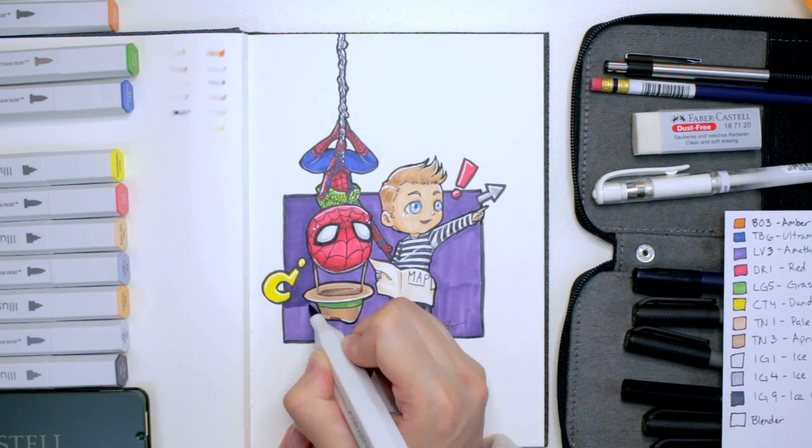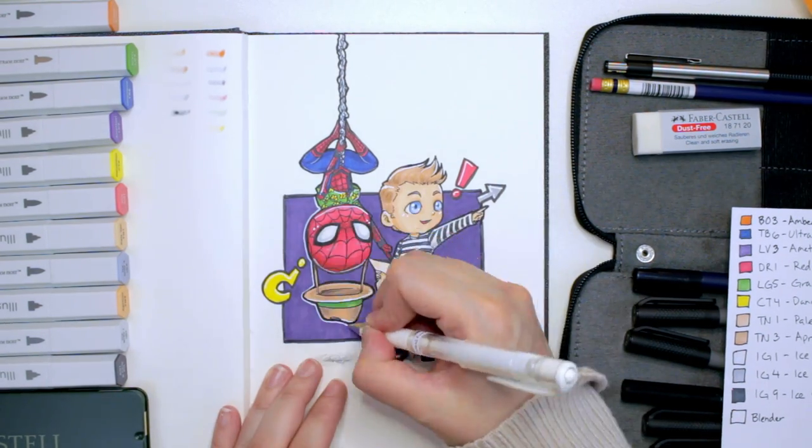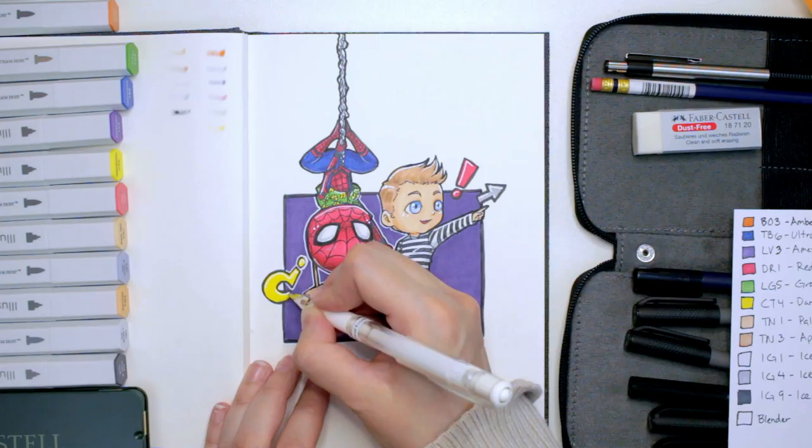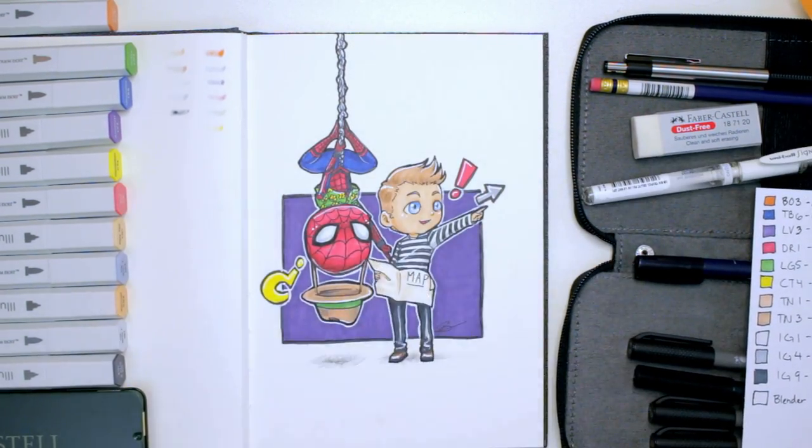I put down two layers going in different directions, trying to make the color look less streaky. To pop the characters out from the dark background, I outlined them with the white gel pen, then touched up some areas with the fineliners where the white went a little over.